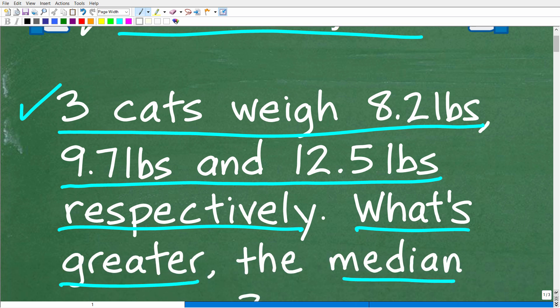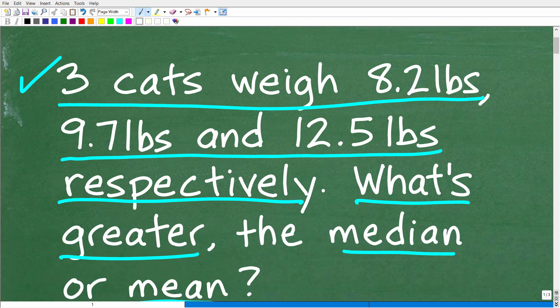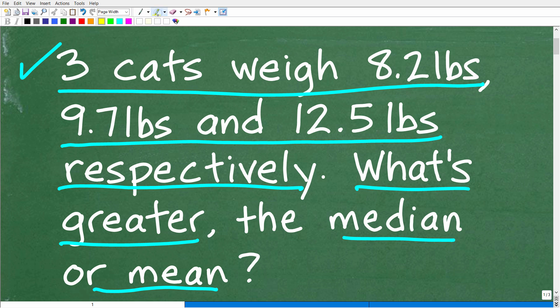Alright, now before I show you the answer, let's go ahead and take one more quick look at the question. So three cats weigh 8.2 pounds, 9.7 pounds, and 12.5 pounds, respectively. So what's greater in value, the median or the mean, when it comes to the weight of the cats?